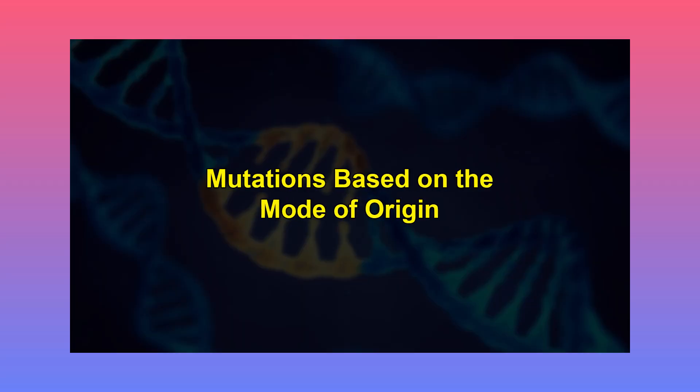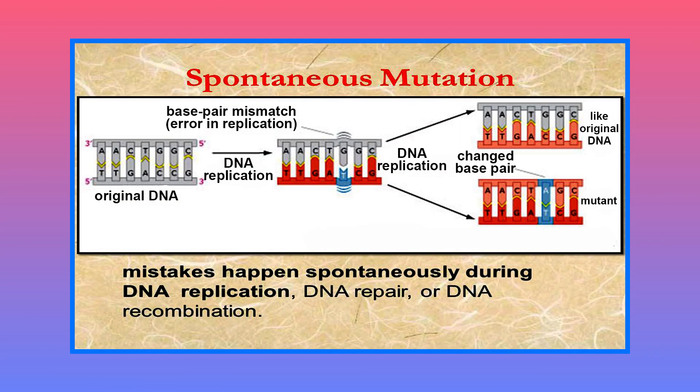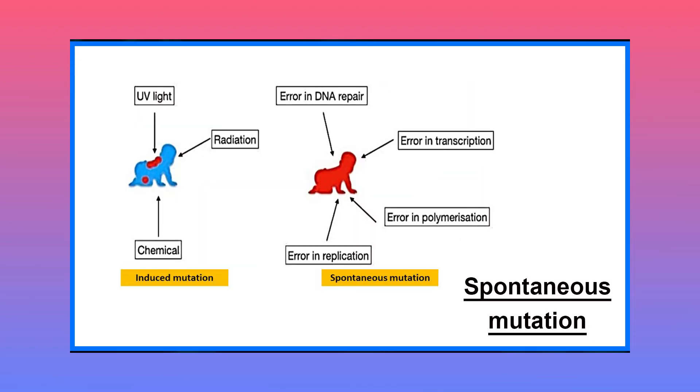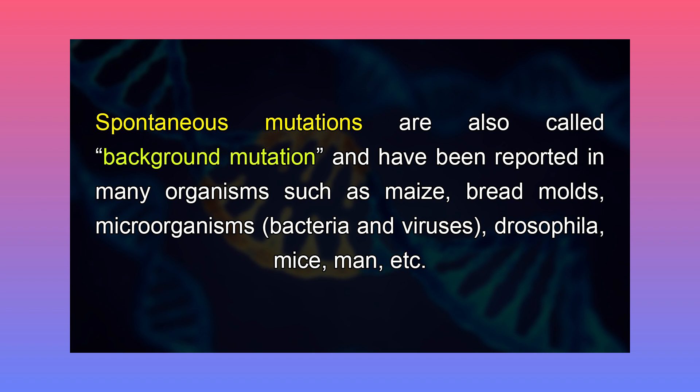Let's discuss mutations based on the mode of origin. Spontaneous mutations occur suddenly in nature and their origin is unknown. They arise due to metabolic errors, replication errors, or developmental errors. Larger genes are more prone to spontaneous mutation because the chance of replication error is higher in larger genes. They are also called background mutations and have been reported in many organisms such as maize, bread molds, microorganisms like bacteria and viruses, Drosophila, humans, and mice.